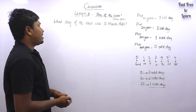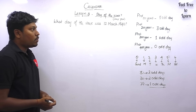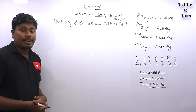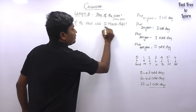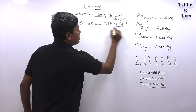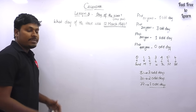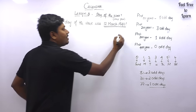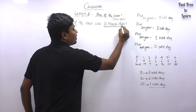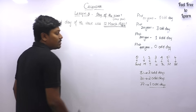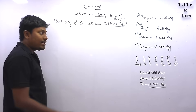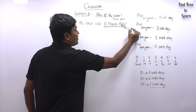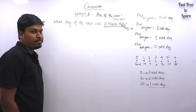Question 1: What day of the week was 12th March 1940? Our target is to find which day of the week 12th March 1940 falls on. The first step is to check whether it is a leap year or not. Check the last two digits: 40. Is it divisible by 4? Yes, it is. So we can say 1940 is a leap year.